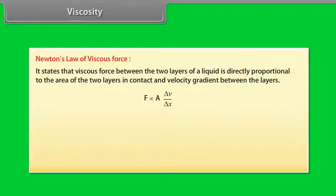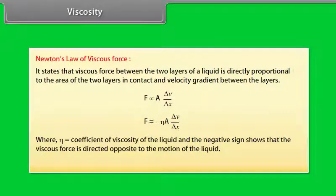F is directly proportional to A into ΔV/ΔX. This equation can be written as F equals -ηA(ΔV/ΔX), where η is the coefficient of viscosity of the liquid and the negative sign shows that the viscous force is directed opposite to the motion of the liquid. Its dimensional formula is ML⁻¹T⁻¹.